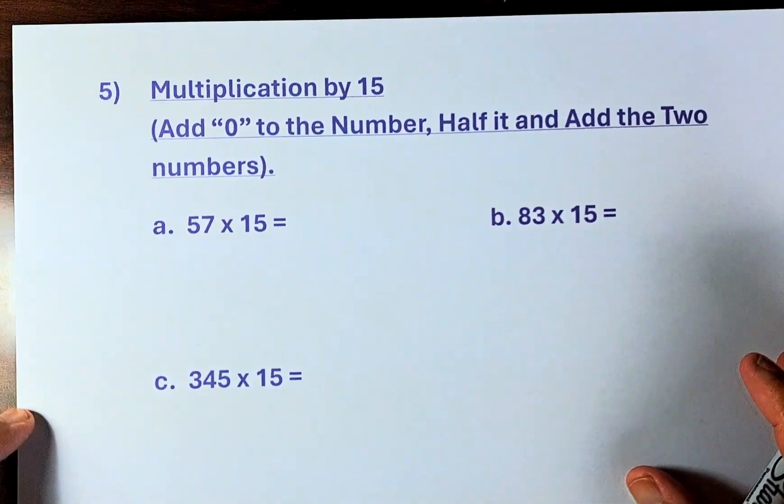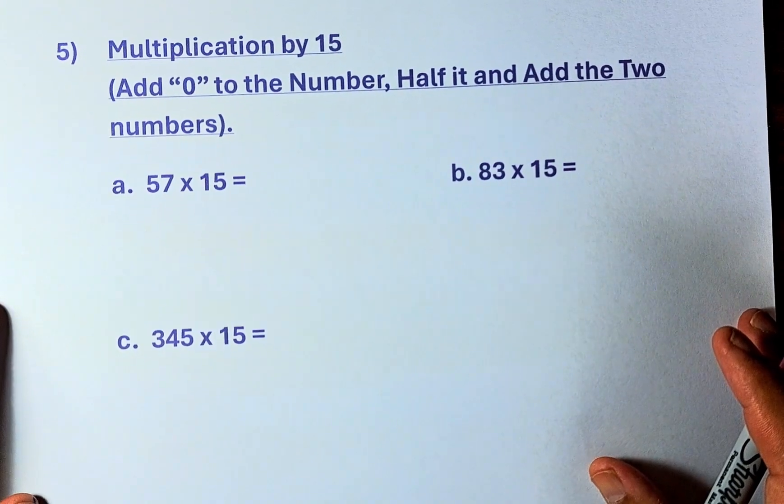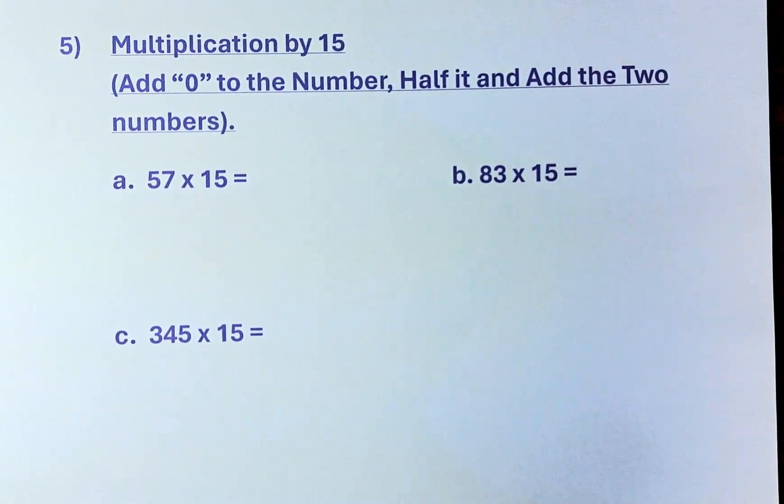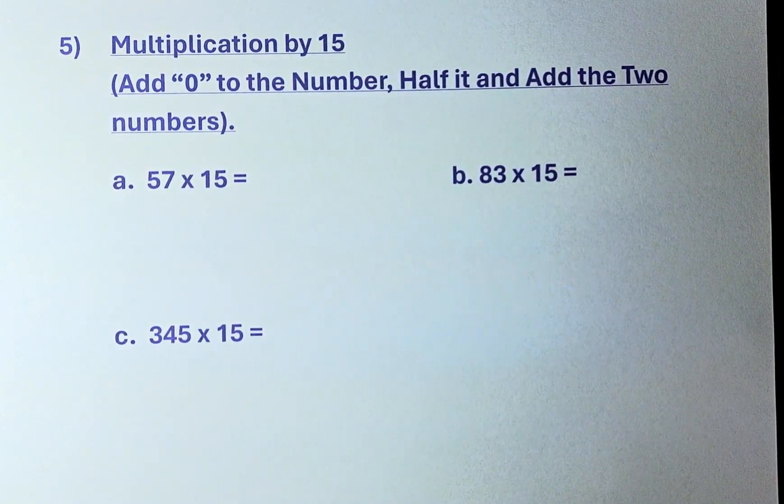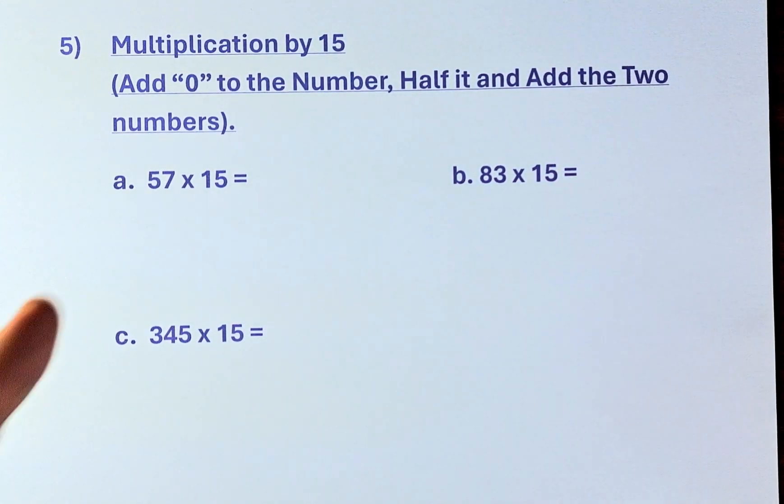Last but not least. We are going to do similar to what we did with multiply by 5. Now we are going to multiply by 15. So multiply by 15, you're going to add 0 to the number, same what you've done before, half it, but this time you need to add the 2 numbers together. So I've given you 3 examples because this is very interesting.